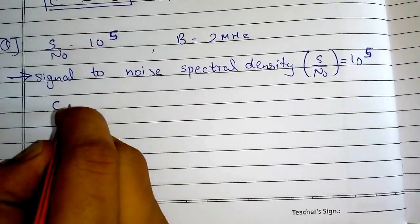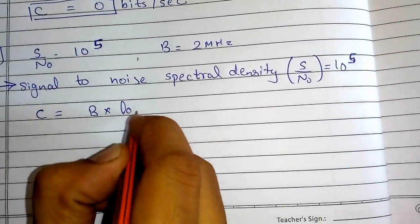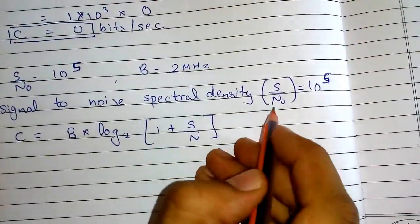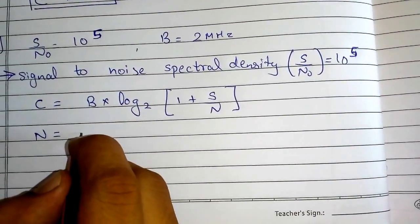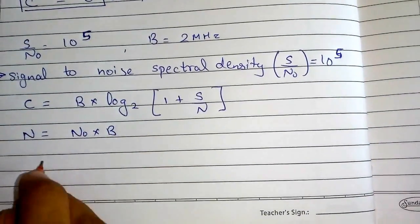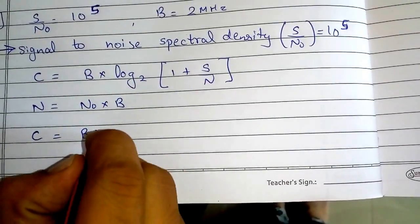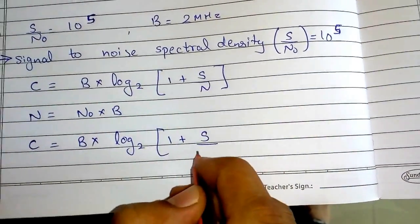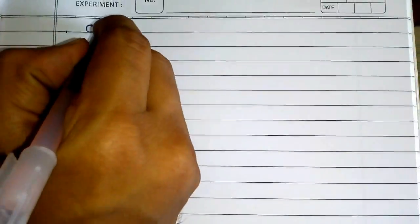I know that channel capacity C equals bandwidth into log base 2 of (1 + S/N), but I am given S/N₀. What I know is N = N₀ × bandwidth. So my formula changes to C = B × log base 2 of (1 + S / (N₀ × B)). Now let's substitute the values.